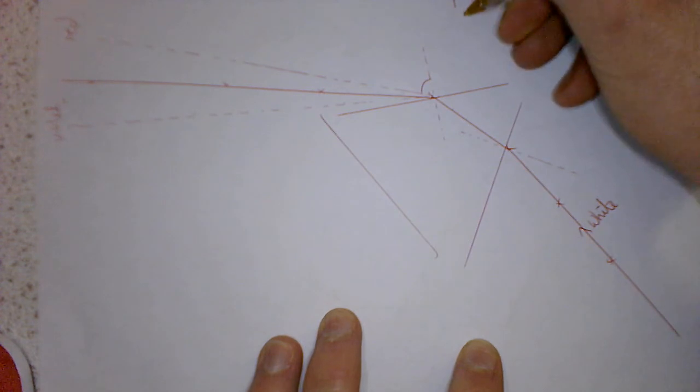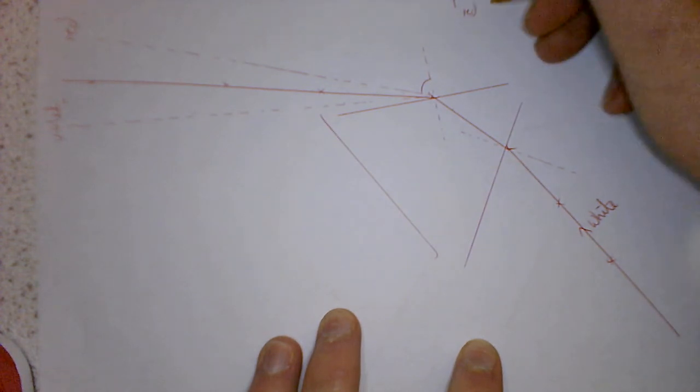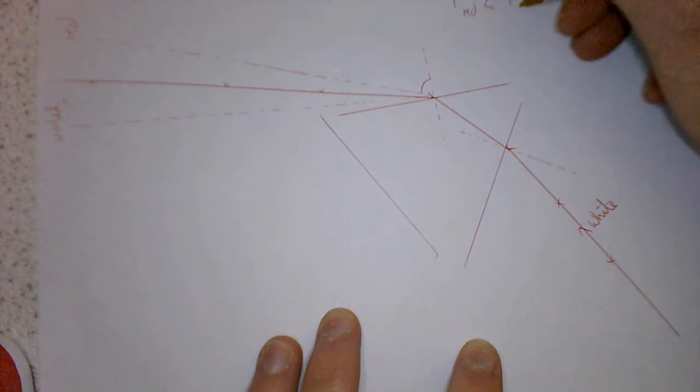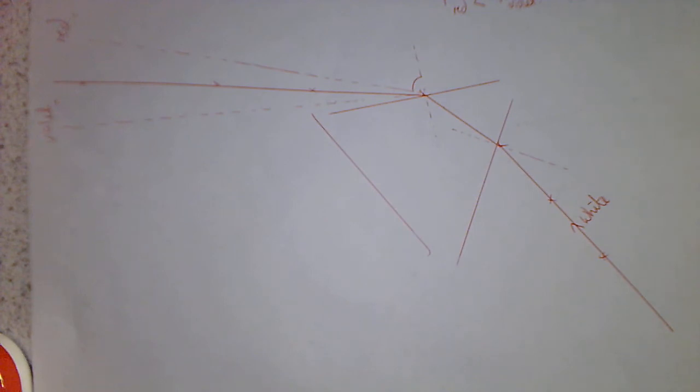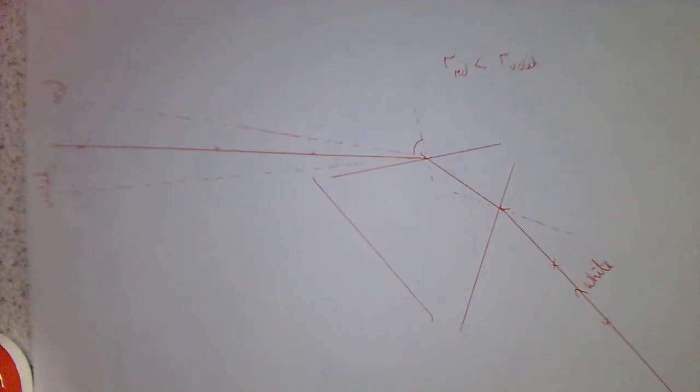So the key thing is that red has a smaller angle of refraction than violet. So the angle of refraction for red, alpha red, is smaller than the angle of refraction for violet. So that's what we have going on here. So let's actually get that onto screen. So this is our observation.